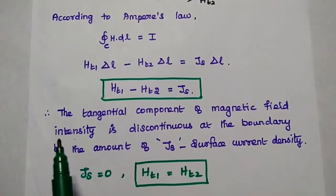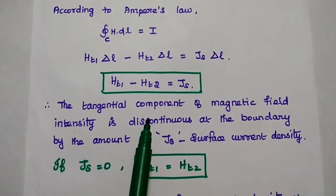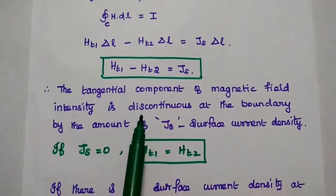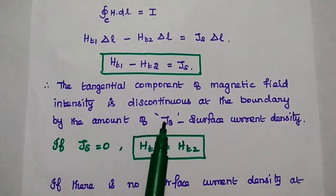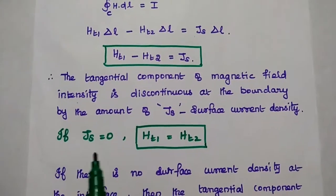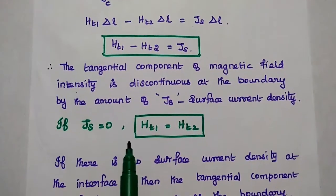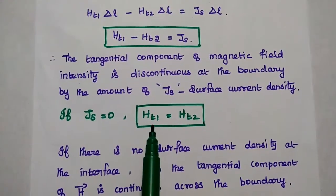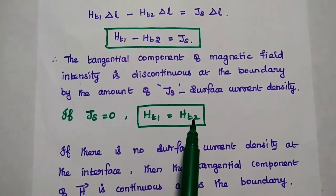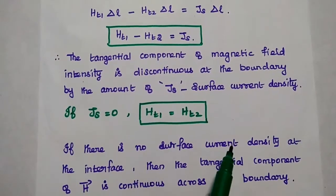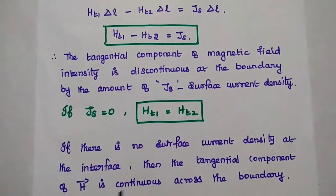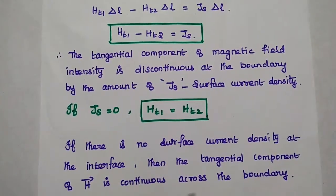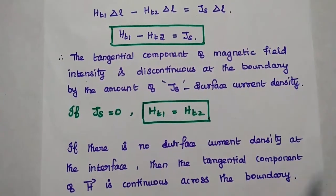Finally, we get that the tangential component of magnetic field intensity is discontinuous at the boundary by the amount of JS. If JS is equal to 0 — that is, the surface current density is zero — then HT1 is equal to HT2. If there is no surface current density at the boundary, the tangential component of H is continuous across the boundary.